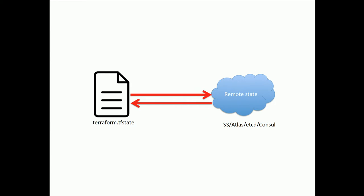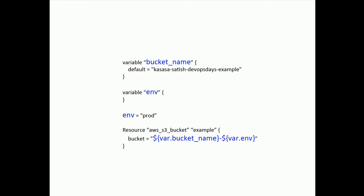The Terraform state file could also get corrupt, in which case manually edit the corrupt state file and then run the plan command to verify that your state matches the actual infrastructure. Given the importance of the state file, Terraform provides the option to store a remote state using the remote command. We, for example, use S3 for storage with versioned buckets.